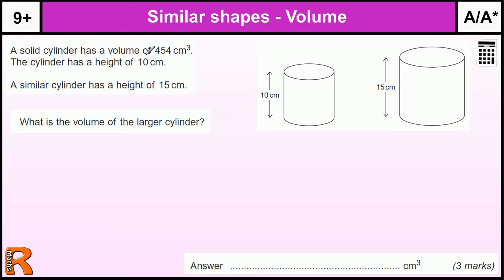A solid cylinder has a volume of 454 centimeters cubed. That's this one with a height of 10. A similar cylinder has a height of 15.